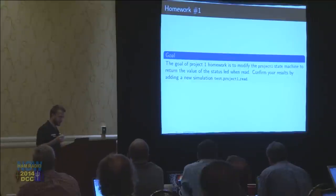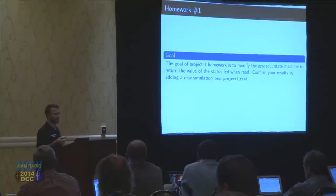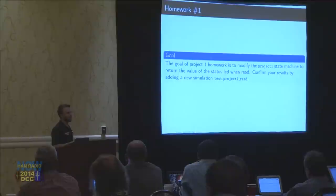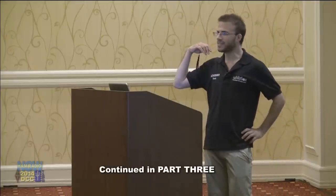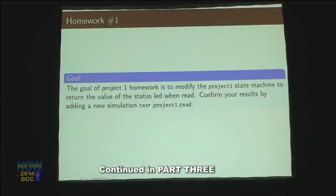We're up to the 30-minute break section — probably more like a 25-minute break because I'm a little behind. The goal of this first project is, besides getting your thing running, to modify the state machine of project one so that it returns the value of the light — so if the light's on it returns a one, and if the light's off it returns a zero. And the goal is to add a new simulation called test_project1_read into the system that will test and make sure this works the way you want it to.